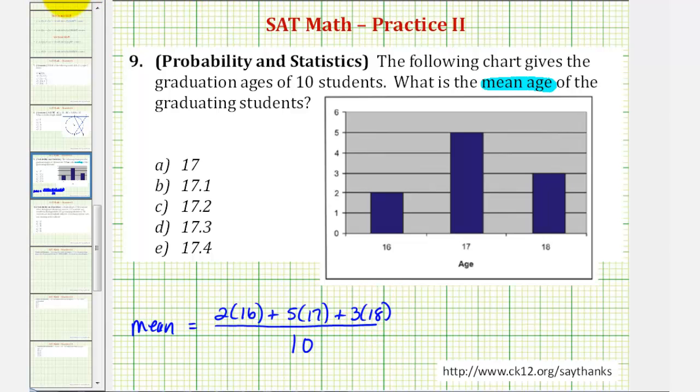So looking at this formula, notice there are two ages of sixteen, five ages of seventeen, and three ages of eighteen, so we're dividing by a total of ten because there are ten students or ten ages total.